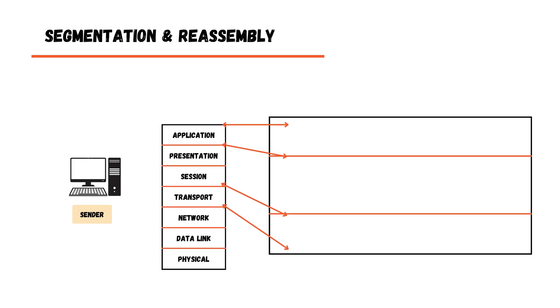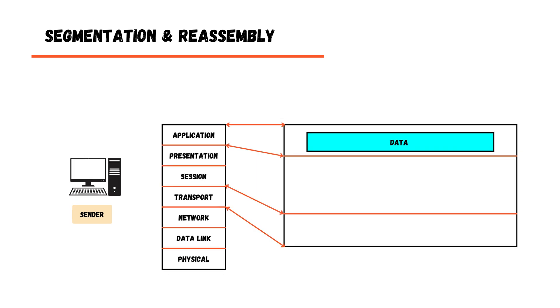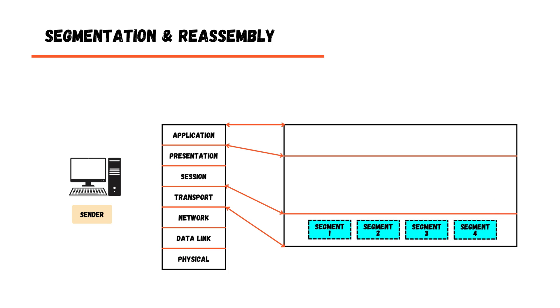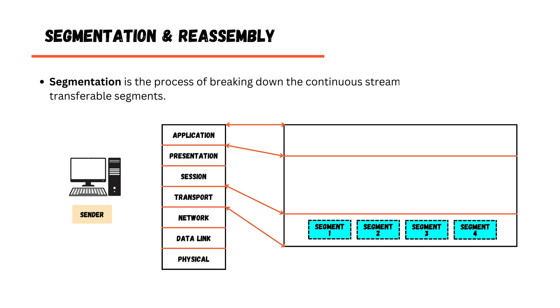The second functionality of the transport layer is segmentation and reassembly. Data generated at the application layer arrives as a continuous stream. As this data flows down to the transport layer, the transport layer cannot process this continuous stream directly, so it breaks the data into segments. This process of breaking data into segments is called segmentation.